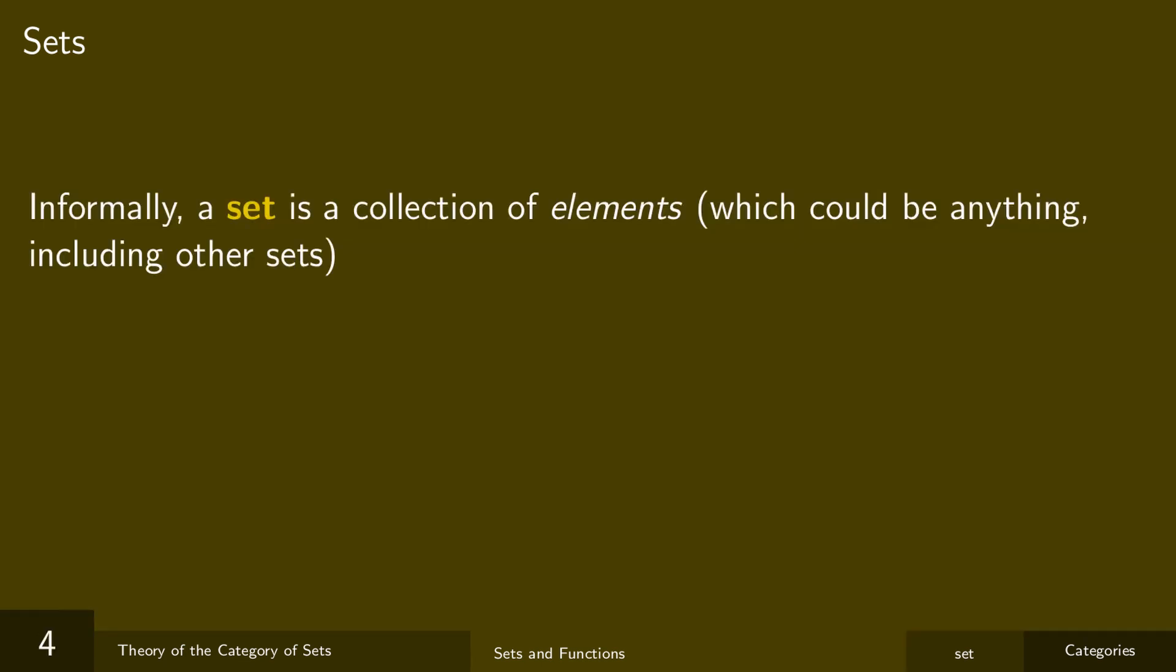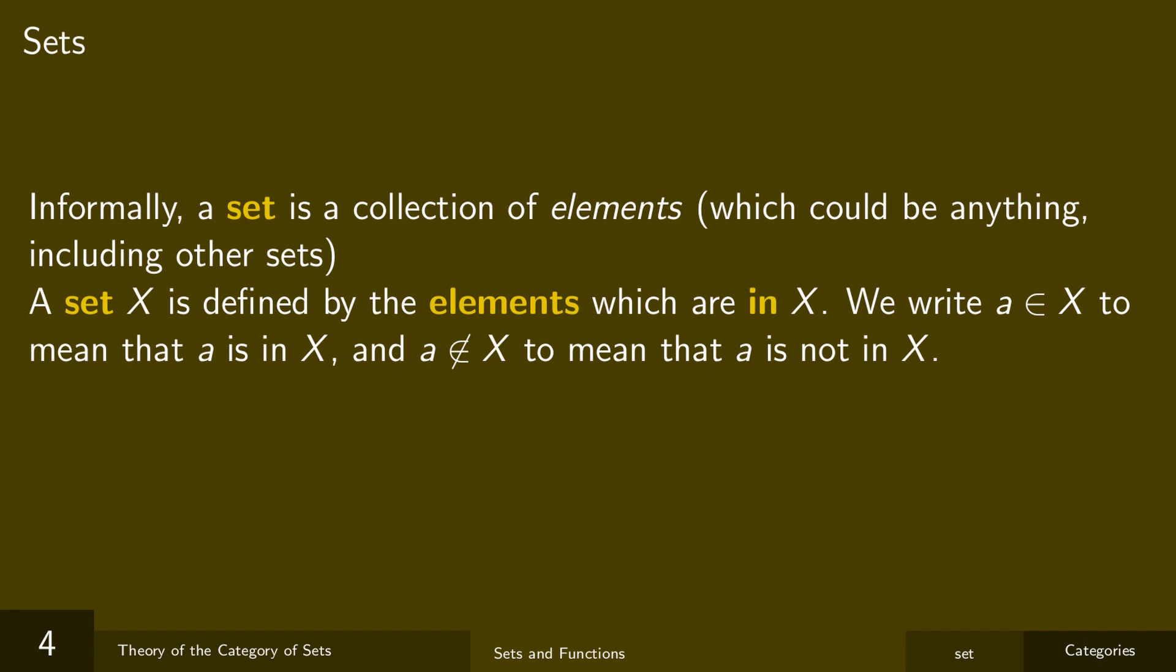So here's a quick summary of everything I just said. Informally, a set is a collection of elements, which could be anything, including other sets. A set X is defined by the elements which are in X. So for each little x, we use this notation to indicate whether x is in X or not in X. And if two sets have the exact same elements, then that means they are the same set. So a more formal way to say that is that if a is in X if and only if a is in Y, then that means that X is equal to Y. This last condition is called the principle of set extensionality, and it's a fundamental axiom of set theory.